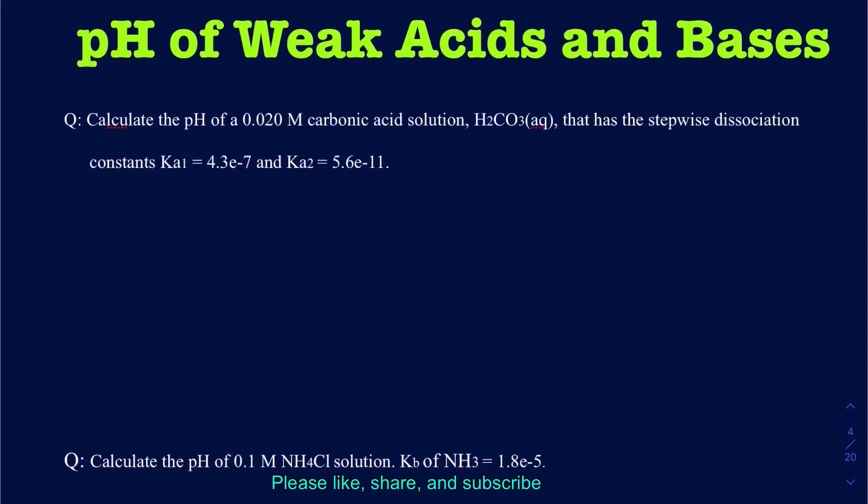Hello, everyone. In this video, we're going to be learning how to calculate the pH of weak acids and weak bases. It's easier to calculate the pH of strong acids and strong bases because we know they are going to be ionizing completely into the ions. But when we are looking at the weak acids and weak bases, they don't really ionize as completely. As a result, we're going to have to look at their Ka values.